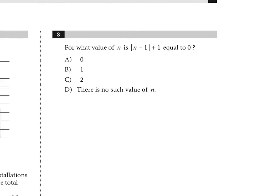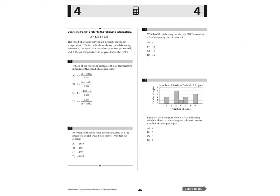Number eight: for what value of n does the absolute value of (n minus 1) plus 1 equal zero? This is a trick question — there is no such value. Whatever is inside the absolute value bars cannot be negative, so you can never make the absolute value expression equal negative one. Therefore there is no solution.